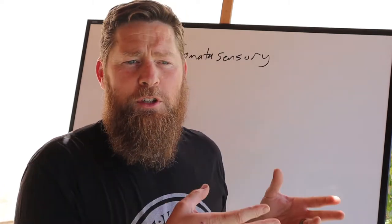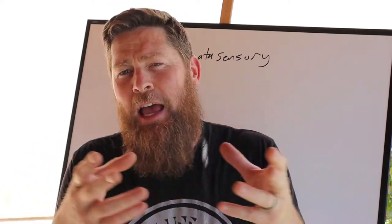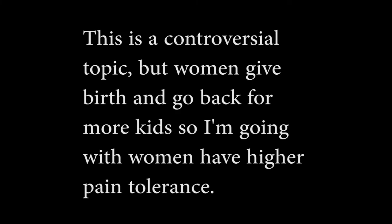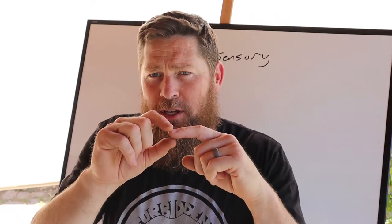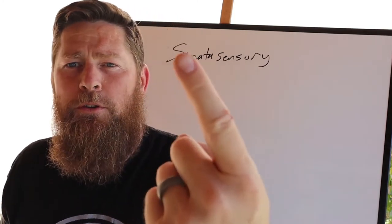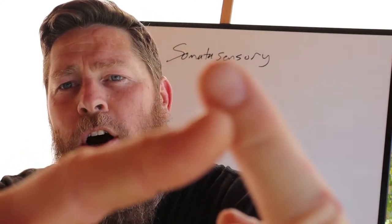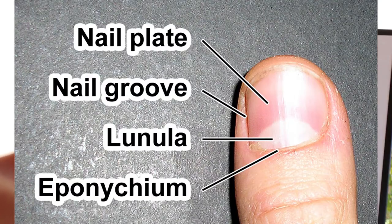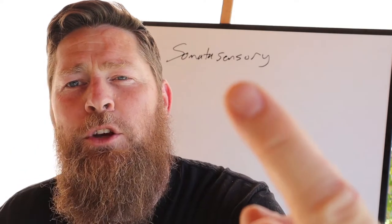It turns out that females actually have generally a higher pain tolerance than males do. You can measure this by taking your lunula — the little arc or band of nerve fibers that you'll see at the base of your nail, what you might call your cuticle. That's called the lunula; it's a band of nerve fibers.